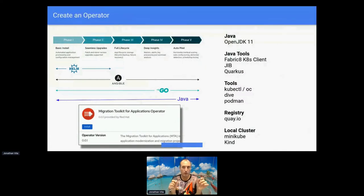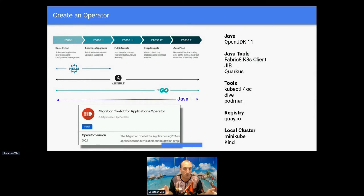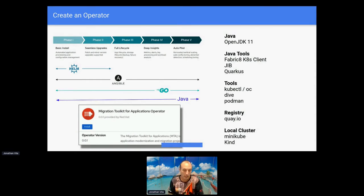To create an operator, we have different ways. This is a maturity matrix for operators. You can create them using Helm charts but you will only reach phase two - upgrades without intervention. With Ansible you can have all maturity levels. With Go and the Go SDK, which is an abstraction that makes everything easier, you can also create operators. And also with Java - in this case I'm putting here the Migration Toolkit for Applications, one of the operators I created in the past, written in Java and already published.